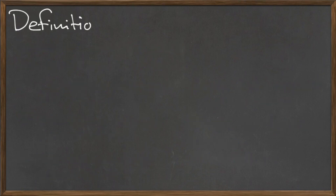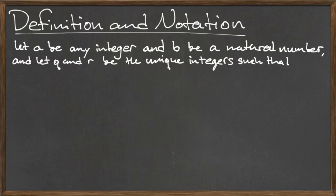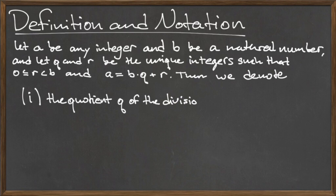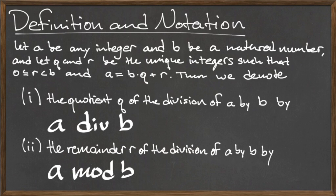Before giving you some examples to try on your own, we'd like to introduce some additional notation to define the quotient and the remainder. Let a be any integer and b a natural number, and let q and r be the unique integers such that 0 is less than or equal to r is less than b, and a equals b times q plus r. Then we denote the quotient q of the division of a by b as "a div b", and we denote the remainder r as "a mod b". These topics will be expanded upon in later videos, so it is important to get used to the terminology, as we will use quotient, div, remainder, and mod interchangeably.